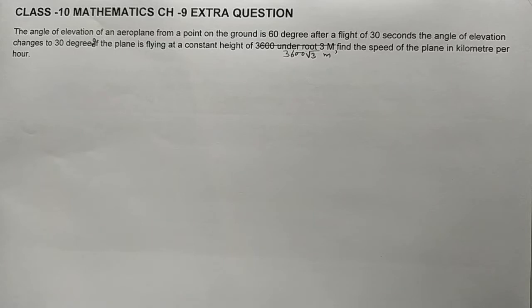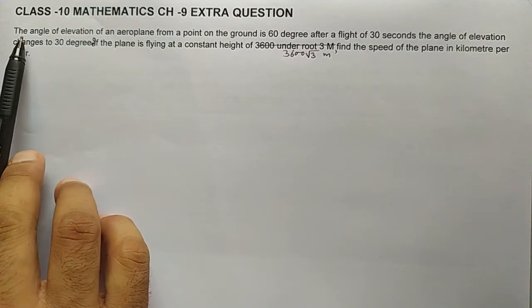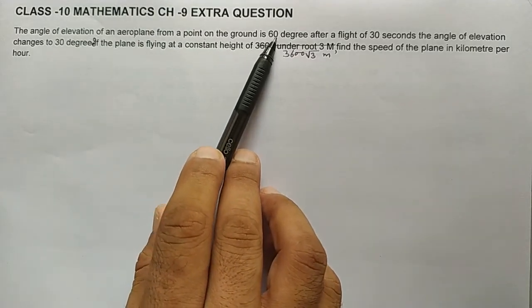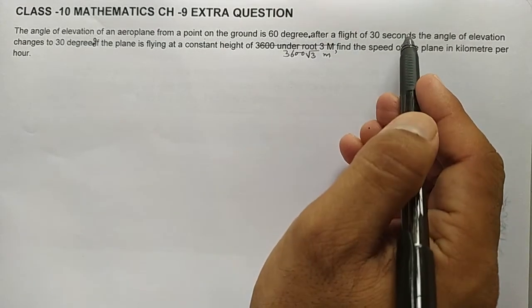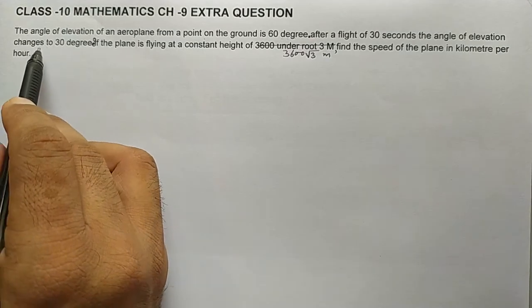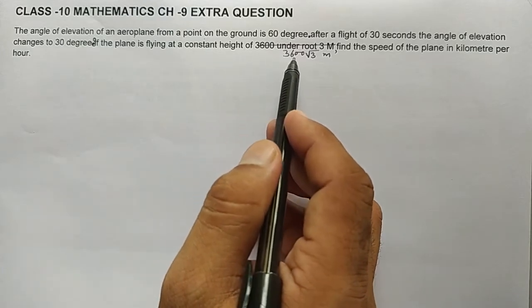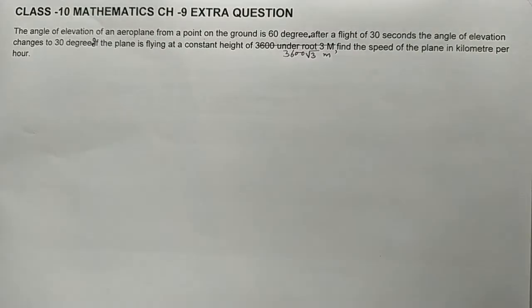Dear students, welcome to this math class. In this video we'll discuss one important question taken from Class 10, Chapter 9. The question is: the angle of elevation of an aeroplane from a point on the ground is 60 degrees. After a flight of 30 seconds, the angle of elevation changes to 30 degrees. If the plane is flying at a constant height of 3600√3 meters, find the speed of the plane in kilometers per hour.